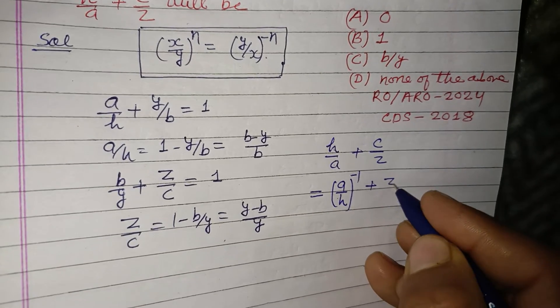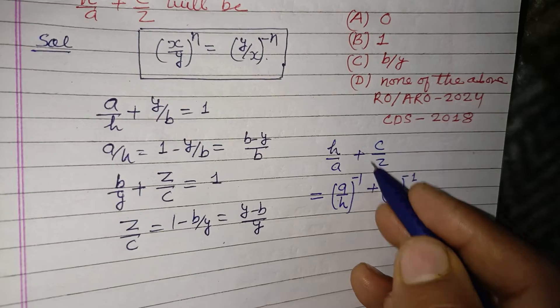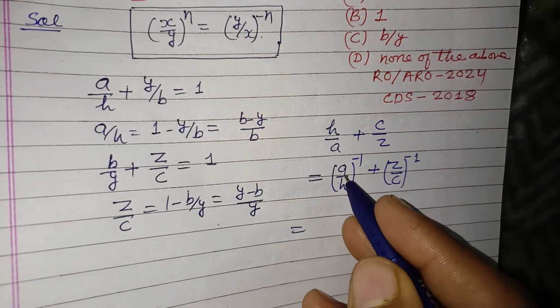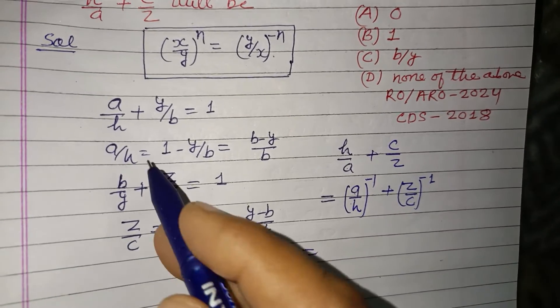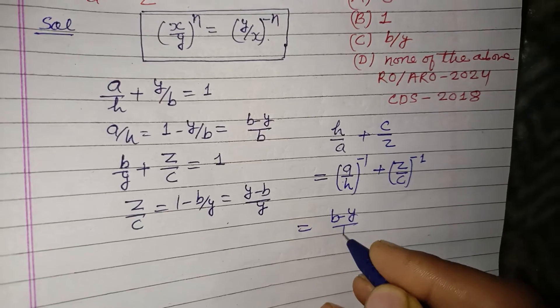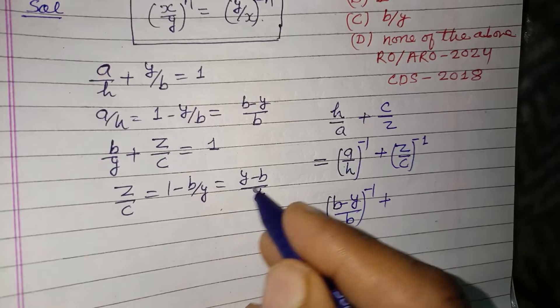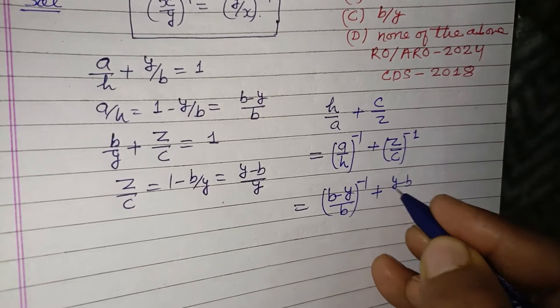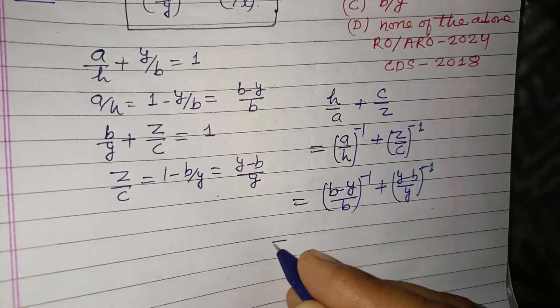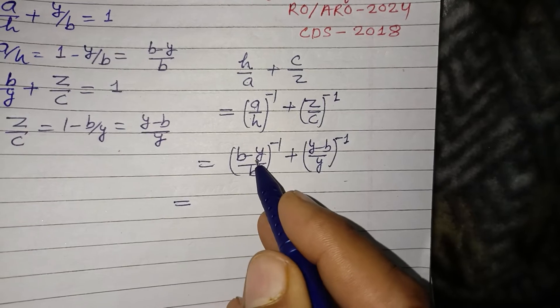a/h, which is (b - y)/b to the power -1, and z/c is (y - b)/y to the power -1. Again we reverse or inverse this inside part of the bracket, so the power becomes positive.